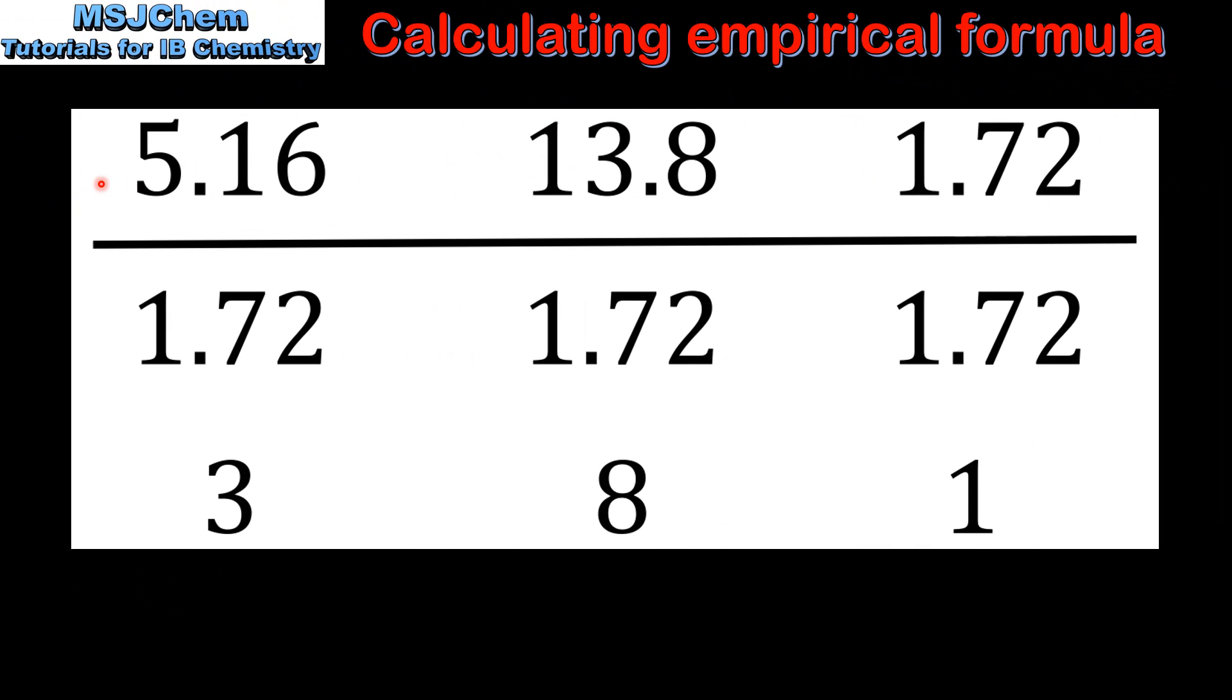Next we divide each of these values by the smallest to find the lowest whole number ratio. So we divide 5.16 by 1.72, which gives us 3. We divide 13.8 by 1.72, which gives us 8, and we divide 1.72 by 1.72 to give us 1.